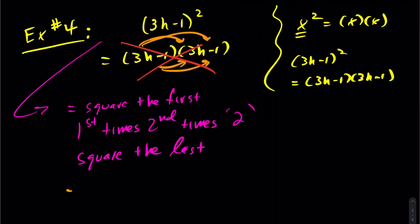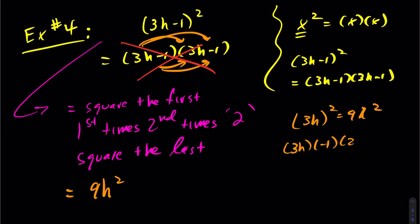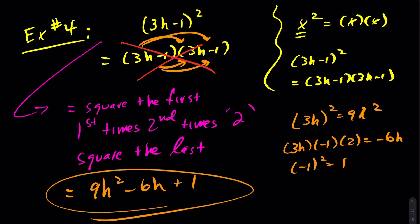Looking at our equation: square the first — the first is 3h, so squaring gives 9h squared. Then first times second times 2: that's 3h times negative 1 times 2, which gives negative 6h. And lastly, square the last term: negative 1 squared gives 1. You might think it's just as quick the long way, but in general all of this can be done in your head as you do more questions — you can expand in a fifth of the time.